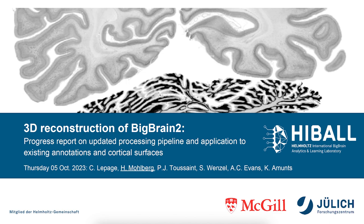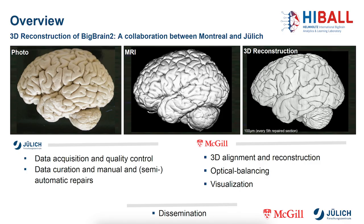The 3D reconstruction of a BigBrain requires not only a considerable amount of time and personnel but also a lot of skills and experience in many fields of modern image processing, and cannot be done by one institute alone in a reasonable amount of time. Therefore, as with BigBrain 1, the data was collected and curated in Jülich, manual and automatic repairs were performed in Jülich, and Claude from the MNI computes, among other things, 3D reconstructions of this dataset.